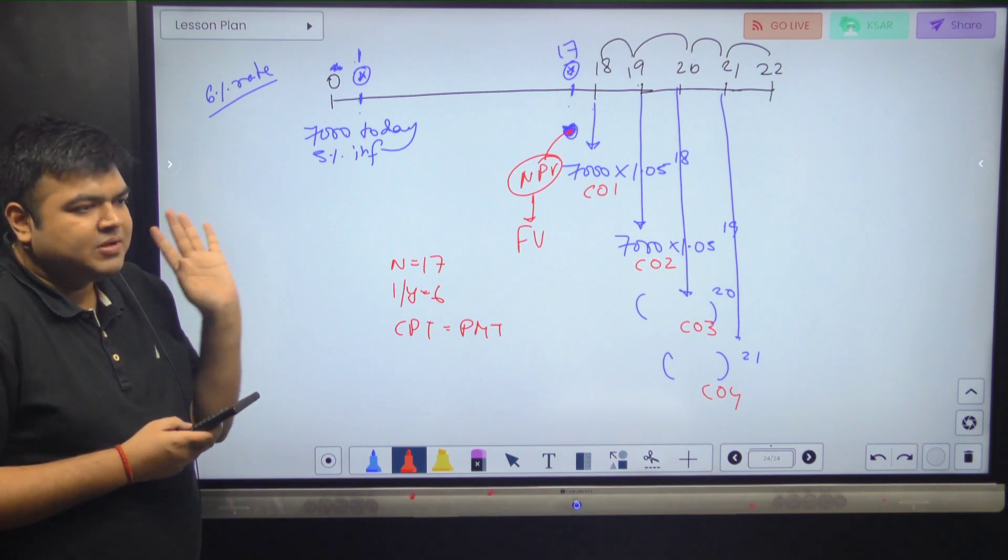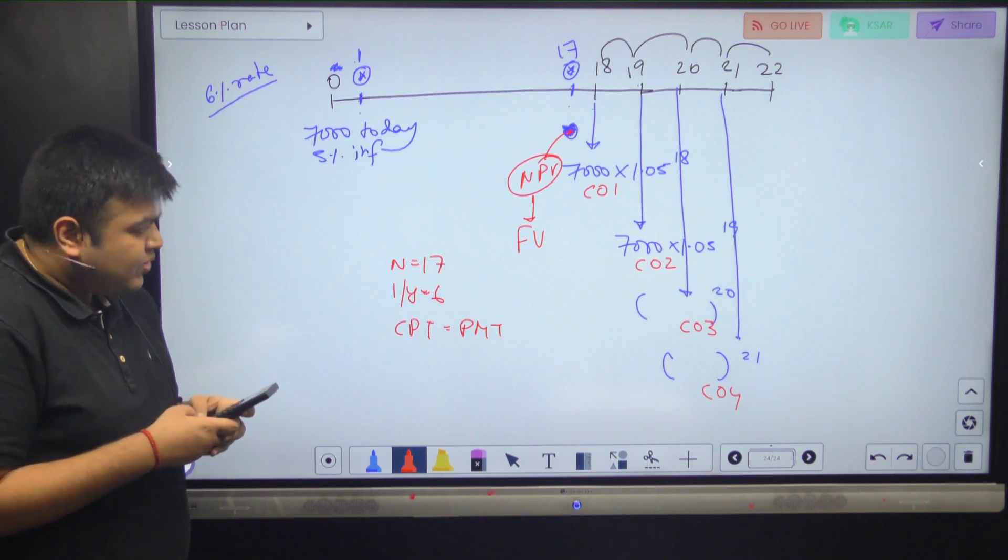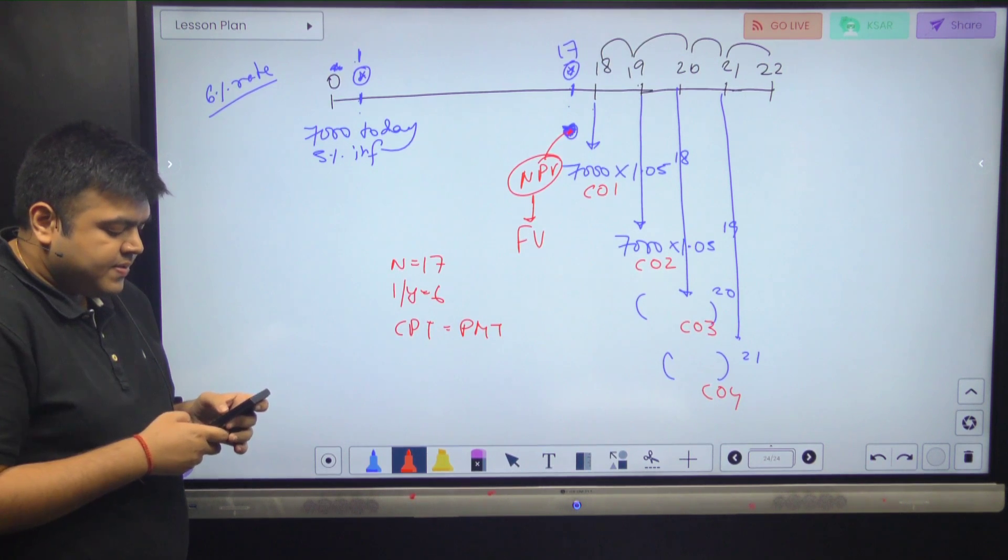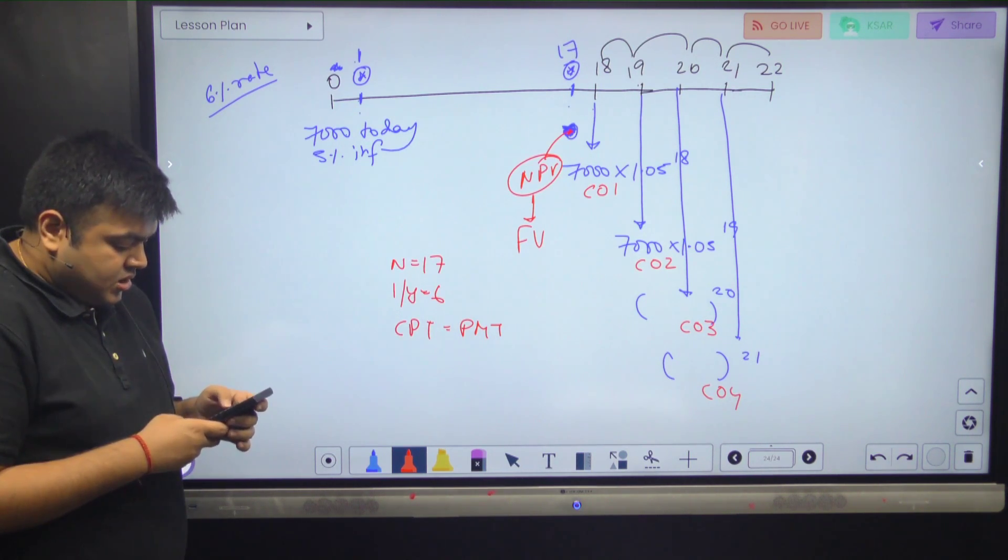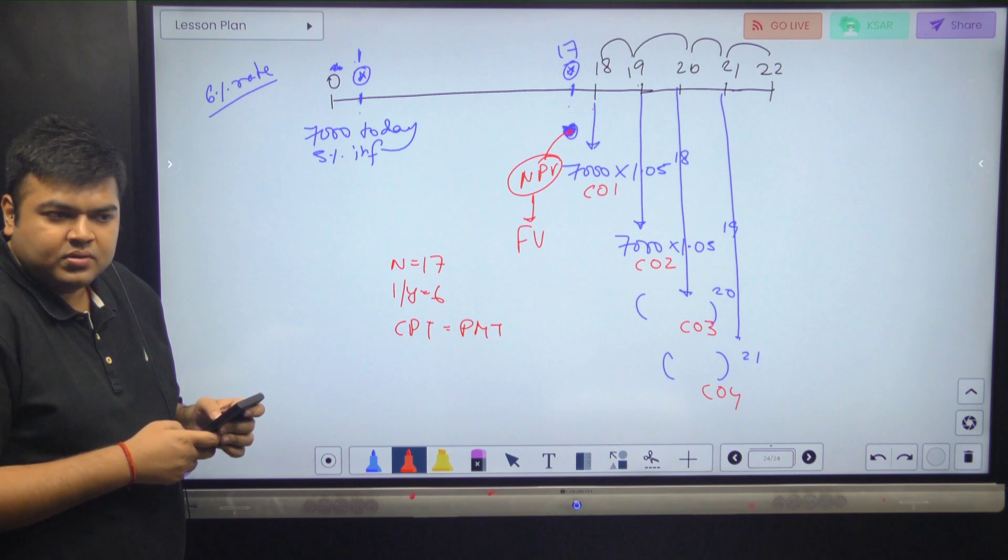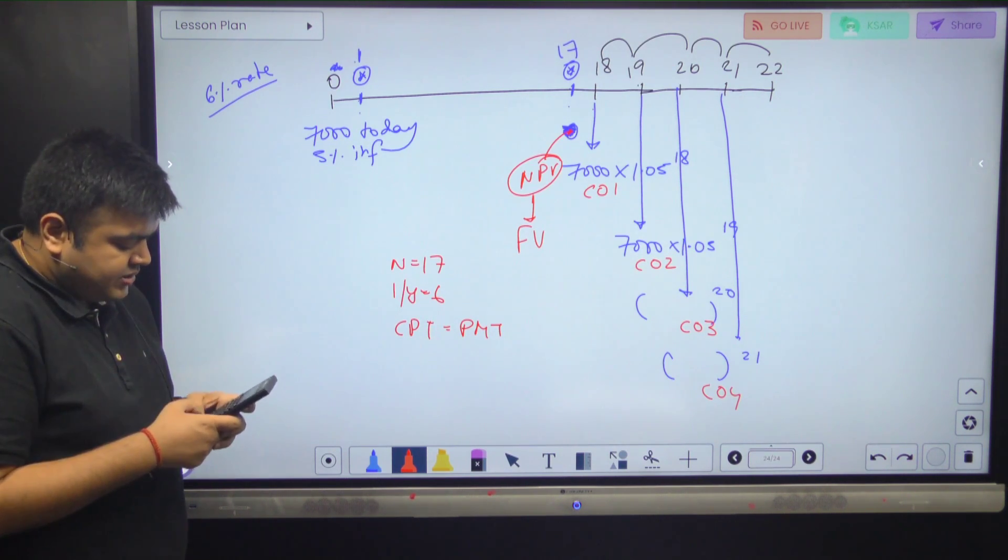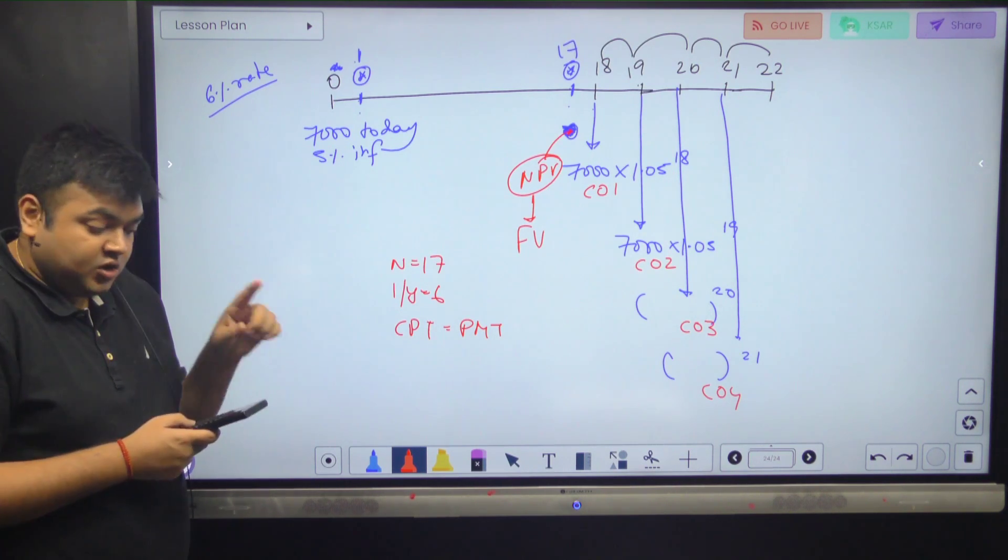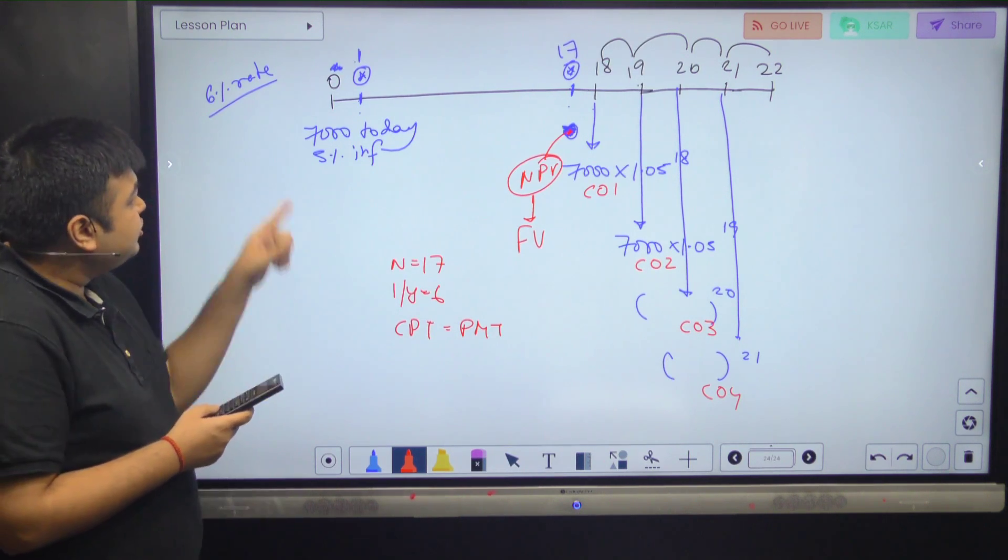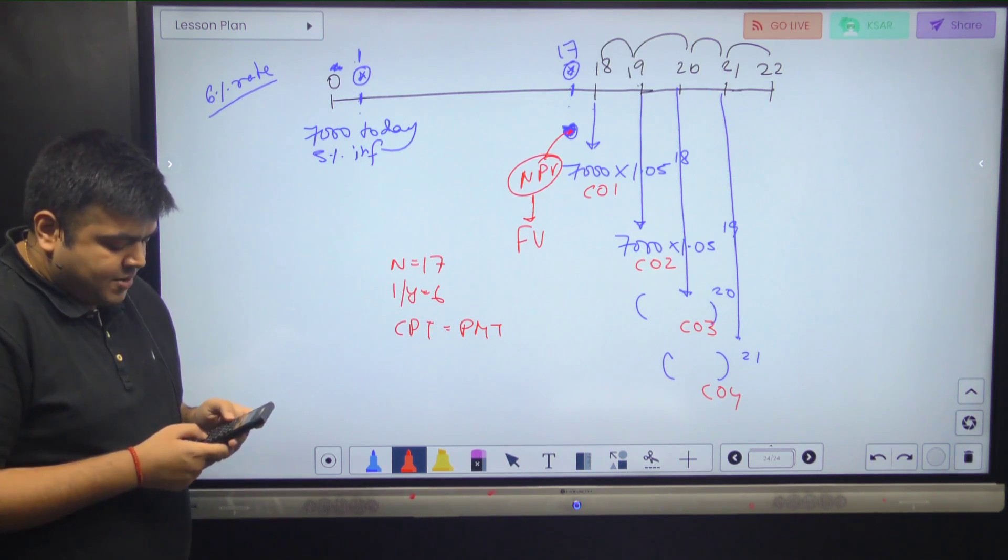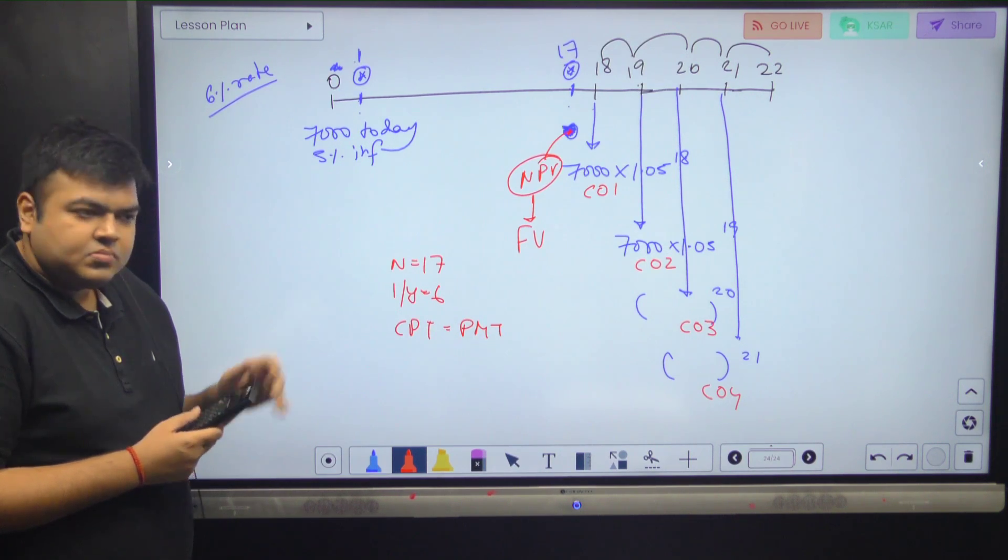Now I don't want to remember that much cash flow. I'm going to do it again and again. 1.05 to the power 19 equals to enter. Arrow down. 1.05 to the power 20 equals to enter. C03 stored. C04 again, 1.05 to the power 21 equals to enter. Got it? Now I go to the NPV function. I equals to 6. Enter. NPV compute. I got a value.